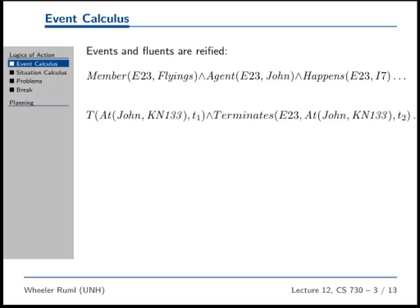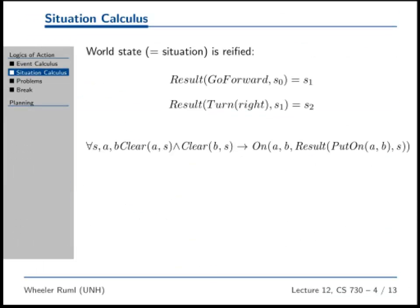You should just know that the event calculus exists — it's one way of thinking about time and actions, and it's especially useful for natural language processing. In AI, the situation calculus is a lot more popular. The situation calculus is like the reverse of the event calculus. Instead of reifying events and having the state of the world be something you deduce by reasoning about when events happened, we're going to reify the situation instead.